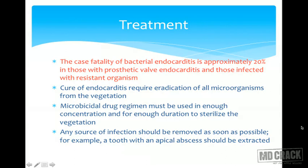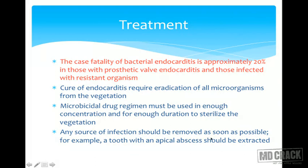The case fatality of bacterial endocarditis is approximately 20%, rising in those with prosthetic valve endocarditis or resistant microorganisms. Cure requires eradication of all microorganisms from the vegetation using a microbicidal drug regimen in enough concentration and for enough duration to sterilize the vegetation. Any source of infection should be removed as soon as possible.